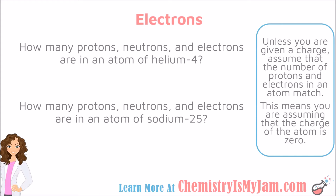For example, how many protons, neutrons, and electrons are in an atom of helium-4? We learned in the last video that that 4 is the mass number. Helium — I can look at the periodic table and tell that it has an atomic number of 2. That means that there are 2 protons in this atom. There is not a charge given, so we can assume that the number of protons and the number of electrons match. So there are 2 electrons in this atom.